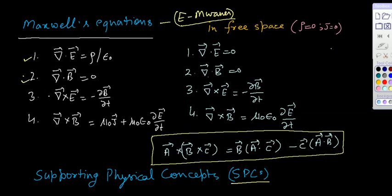The curl of E is equal to minus ∂B/∂t — this is Faraday's law. And del cross B is equal to μ₀J plus μ₀ε₀ ∂E/∂t — and this one is Ampere's law.